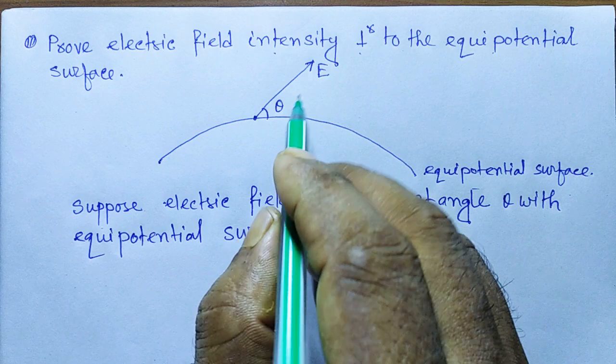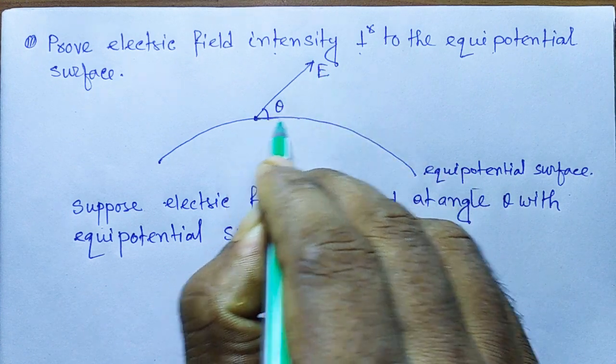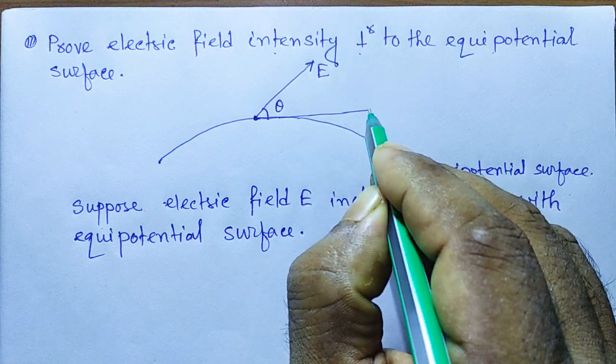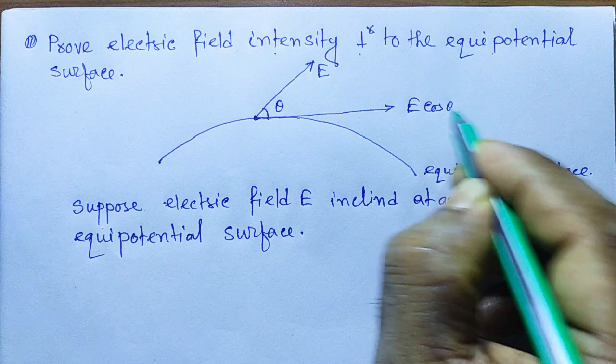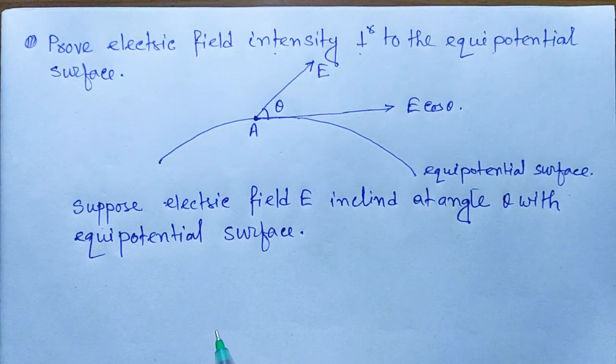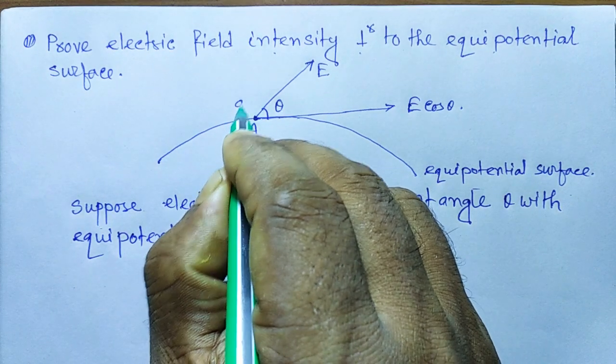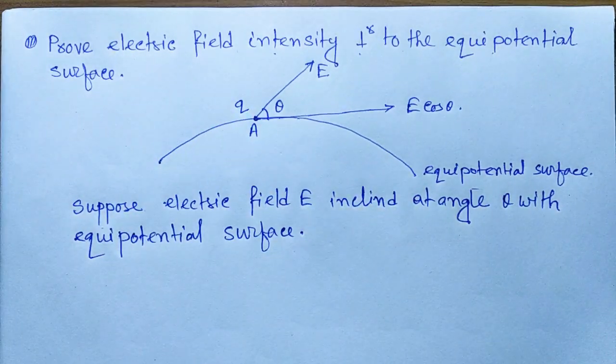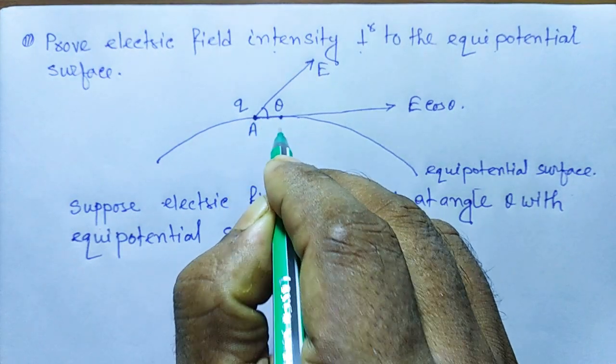First, we split the electric field vector into its horizontal component, which will be E cos theta. This is point A. Now we move a unit point charge - consider charge Q is moved from point A to point B.